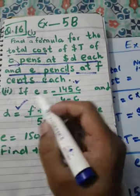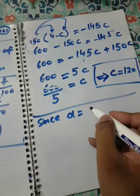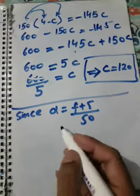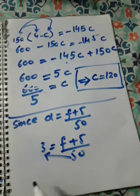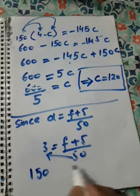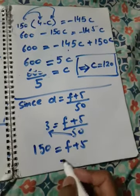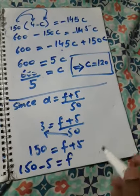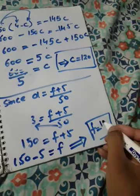Now I have found the value of C. Next, D equals F plus 5 over 50, and D equals 3. So substituting: 3 equals F plus 5 over 50. By cross multiplication: 50 multiplied by 3 gives 150, so 150 equals F plus 5. Moving 5 to the other side: F equals 150 minus 5, which gives F equals 145.